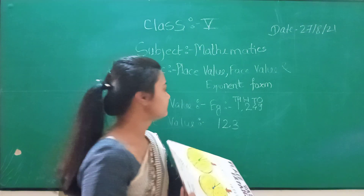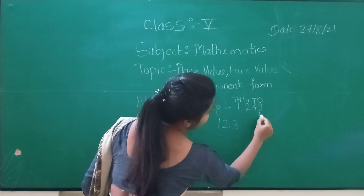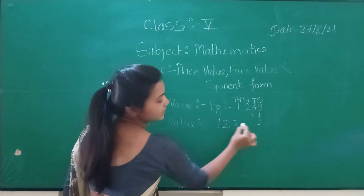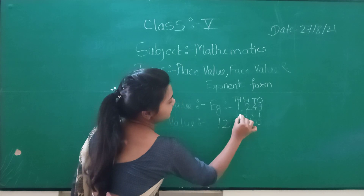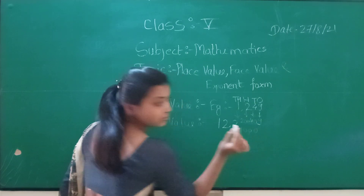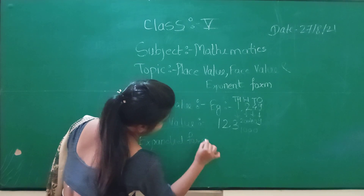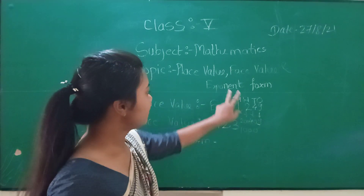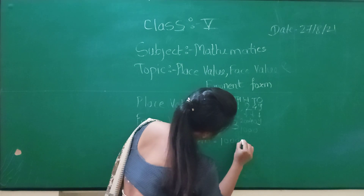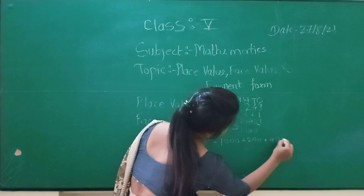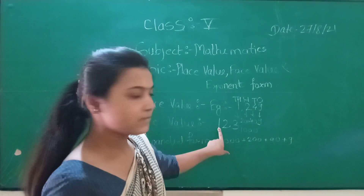Can you understand these examples? The place value of 9 is 9. The place value of 4 is 40. The place value of 2 is 200. And the place value of 1 is 1000. The expanded form of this number is 1000 plus 200 plus 40 plus 9. This is the expanded form of this number.